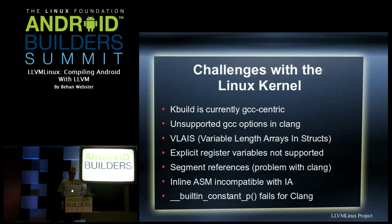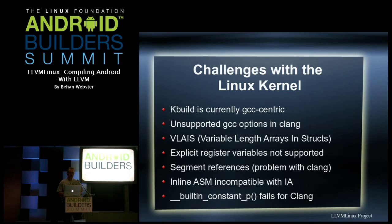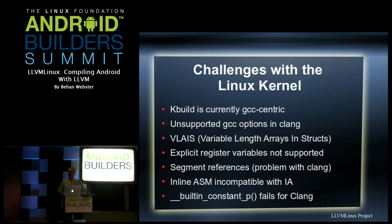I'll go through the specific issues we had with the kernel very quickly. The first is that kbuild doesn't support Clang — it's highly GCC-specific, with options that Clang doesn't support. The other thing is that there are extensions Clang cannot and doesn't want to support, such as variable-length arrays in structs and nested functions. Both are Ada functionality that leaked into the C compiler. Variable-length arrays are actually explicitly forbidden by the C standard when inside a struct.